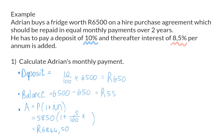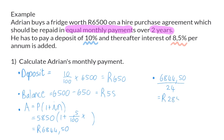Adrien should pay this amount in equal monthly payments over the next two years. This means that the R6,844.50 should be divided into 24 equal payments. Therefore, each payment will be R285.19.